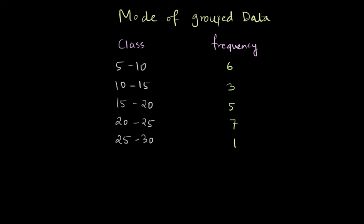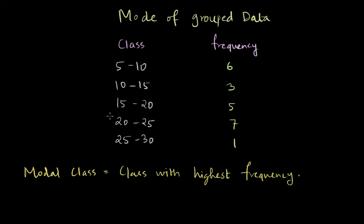So now first step in order to find a mode of the grouped data is to find modal class and the modal class is class with highest frequency. And we can see here that the class with highest frequency is with the frequency seven, because that's the highest. And 20 to 25 is the class where there are most observations and therefore this is modal class.